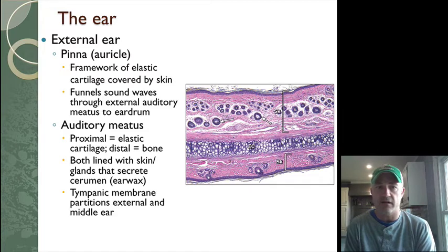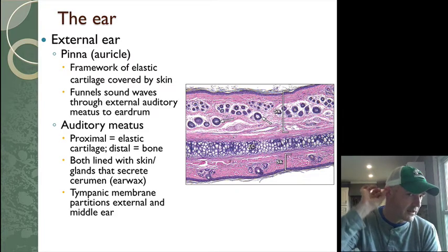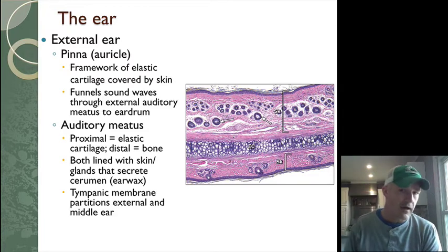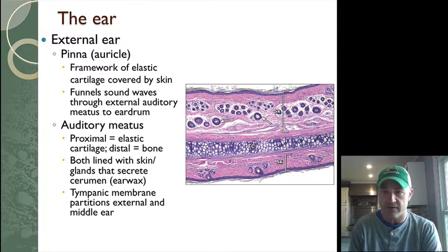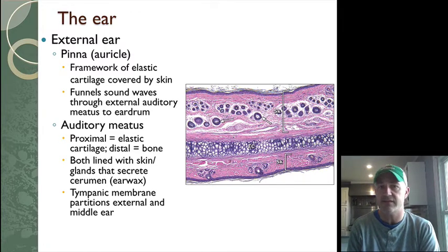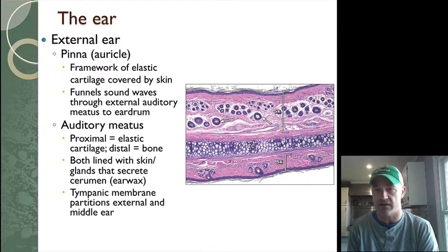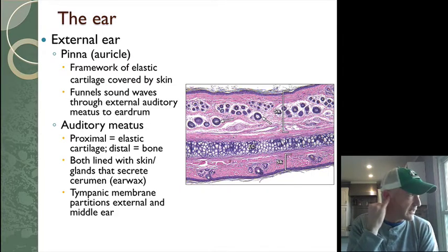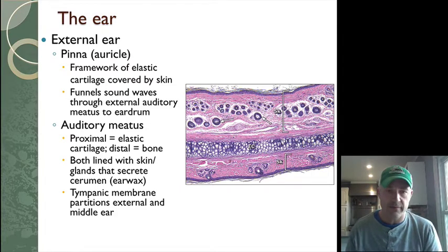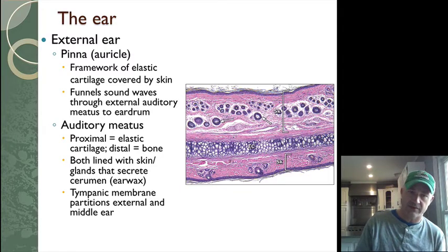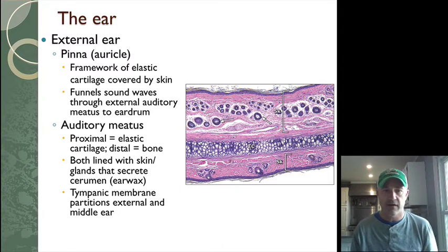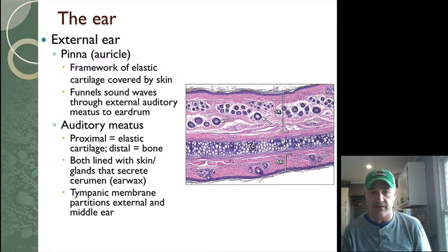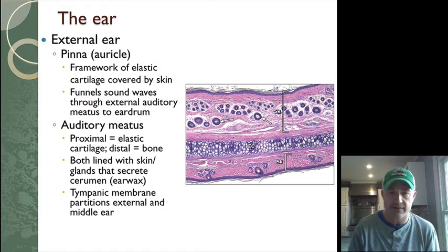The outer part of the ear is called the auricle or pinna. If you look at it on the picture, you can see the elastic cartilage that's making up a lot of that structure. We then have the ear canal or auditory meatus, which is lined with some of this cartilage as well as glands that secrete earwax.